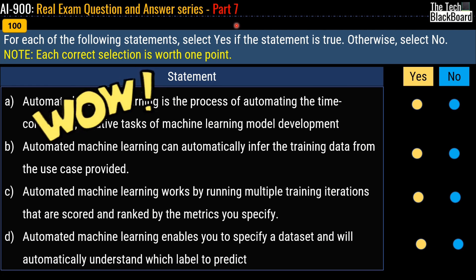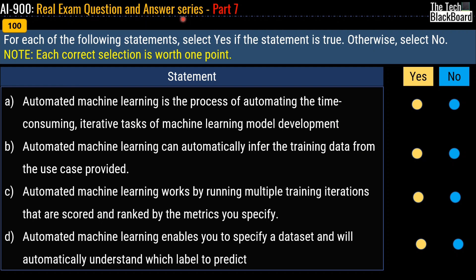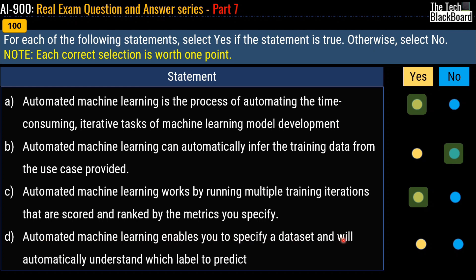Question 100, the last question of Part 7. Statement A: 'Automated machine learning is the process of automating the time-consuming iterative task of machine learning model development' — Yes. Statement B: 'Automated machine learning can automatically infer the training data from the use case provided' — No. Statement C: 'Automated machine learning works by running multiple training iterations that are scored and ranked by the metrics you specify' — Yes. Statement D: 'Automated machine learning enables you to specify a dataset and will automatically understand which label to predict' — Yes.